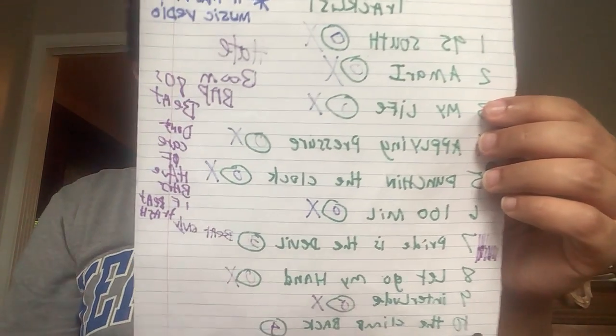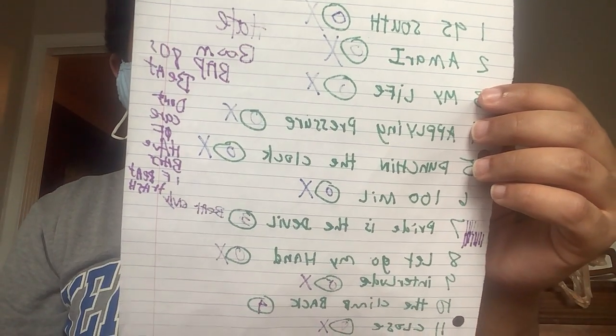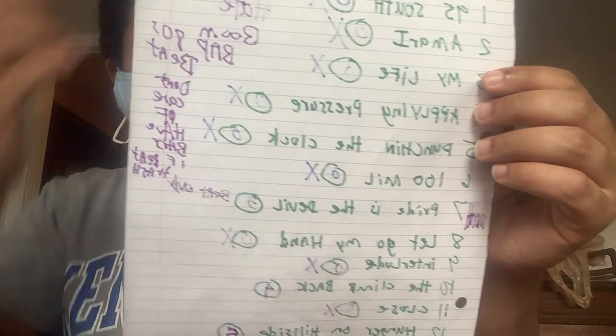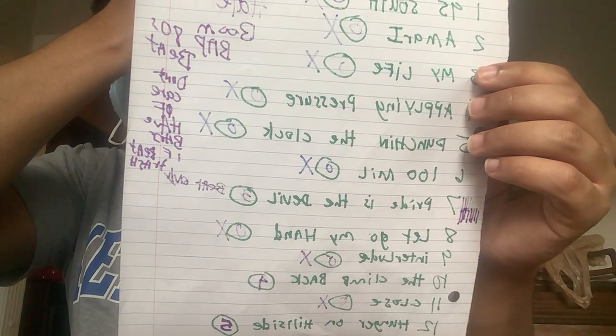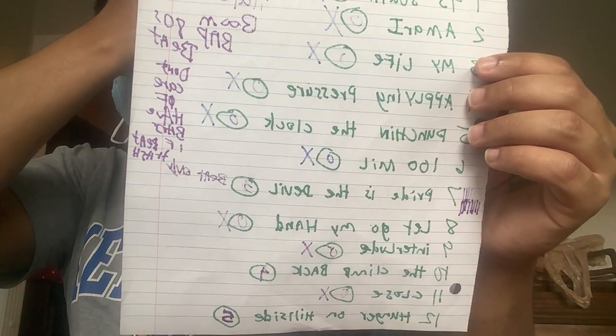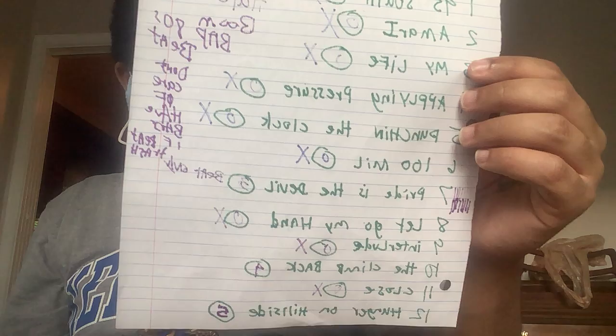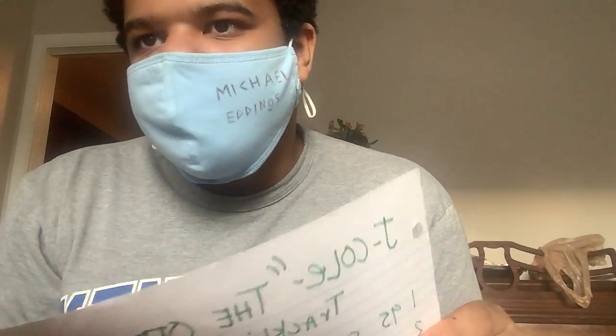Alright, we'll go down this. 95 South: zero. Amari: zero. My Life: zero. Applying Pressure: zero. Punching the Clock: zero. 100 Mil: zero. Pride is the Devil: three. Let Go My Hand: zero. Interlude: zero. The Climb Back: four. Close: zero. Hunger on Hillside: five. Now there's bars and all that cool stuff, but the